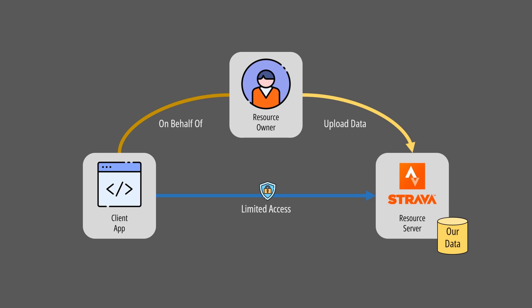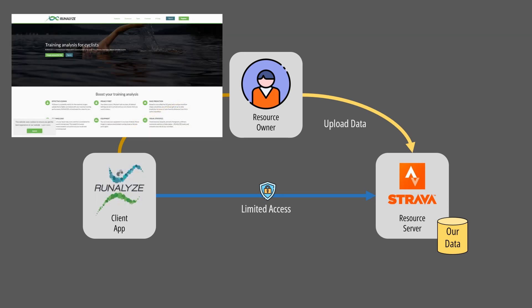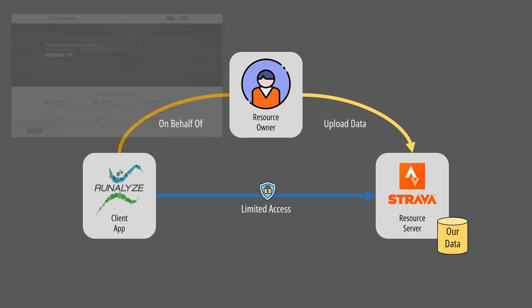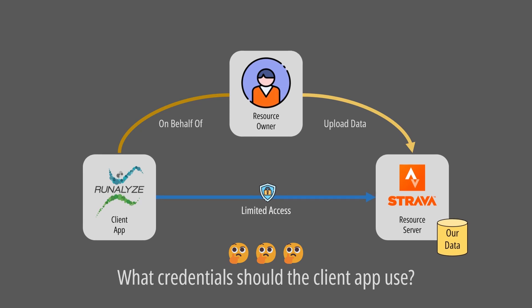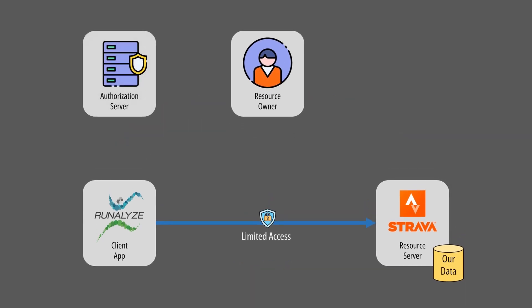Now we have Runalyze, a third-party application known as the client, that wants to gain access to some data in our Strava account. What set of credentials should the client use? Would you give them your own username and password? I hope not. OAuth 2.0 solves this issue by introducing a fourth role: the authorization server.